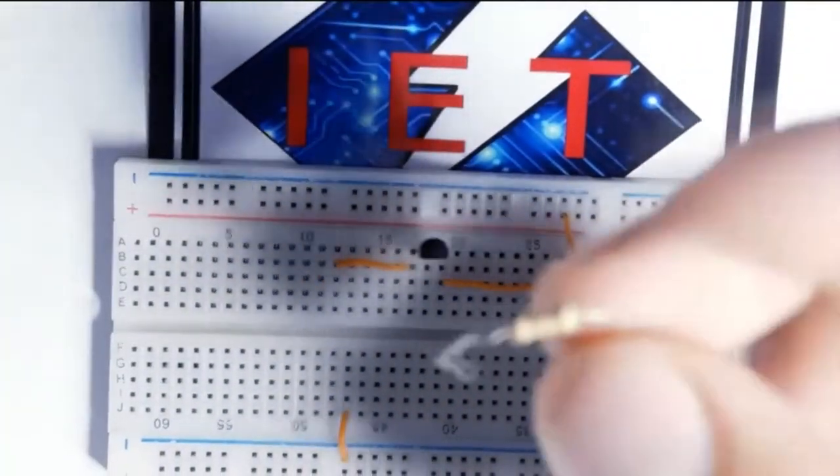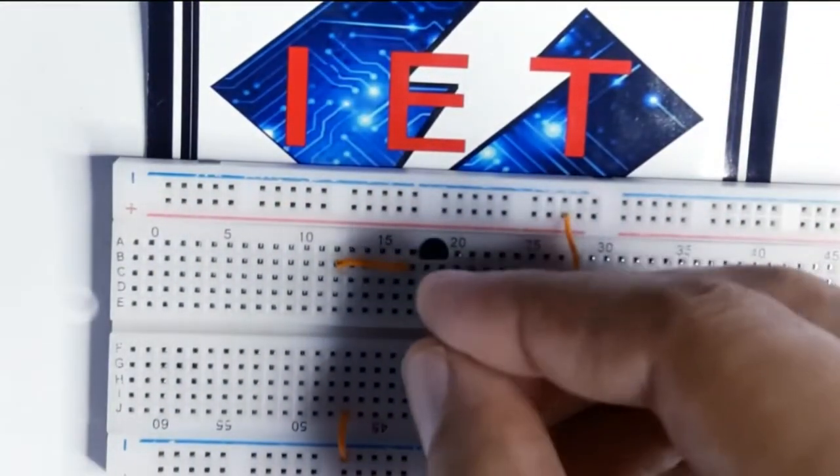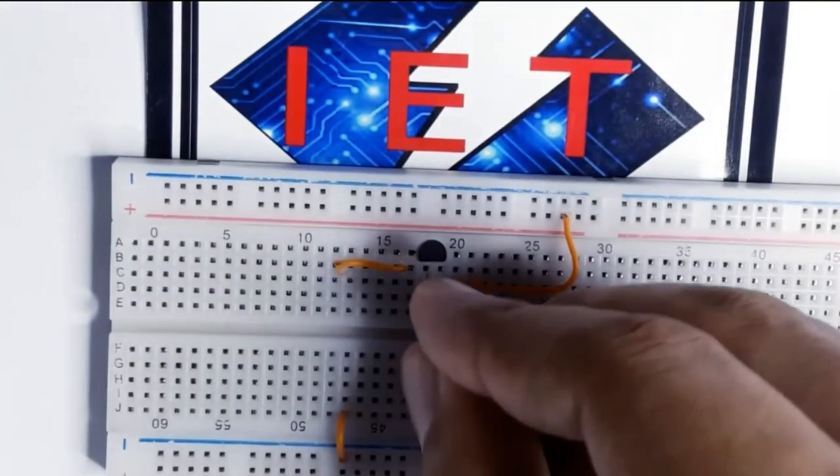10k ohm resistor will go from base to a common point. I am choosing this as a common point, this line.